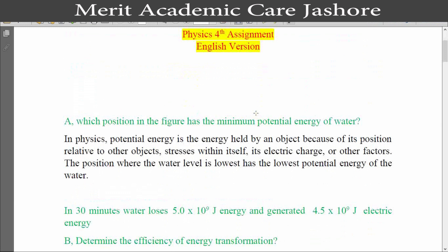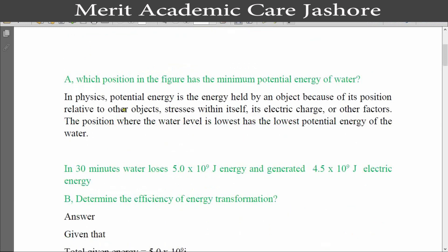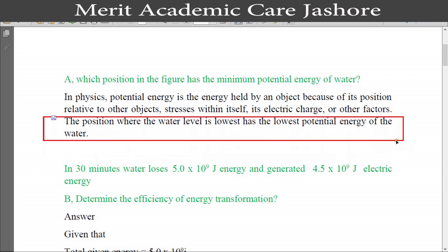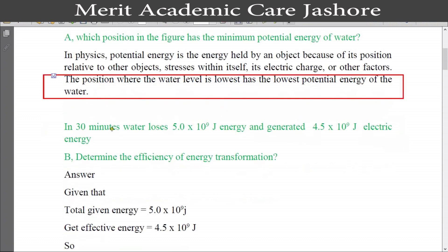Now let's go see the answer to the first question. Our first question was: which position in the figure has the minimum potential energy of water? In physics, potential energy is the energy held by an object because of its position relative to other objects, stresses within itself, electric charge, or other factors. The position where the water level is lowest has the lowest potential energy of the water. This is our first question answer.